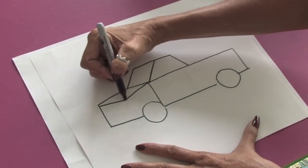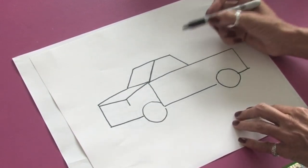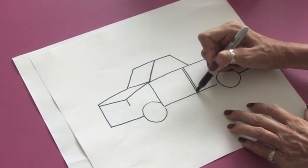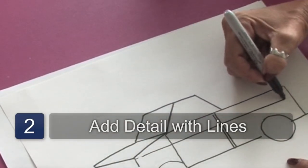So you can see already a truck starting to form but with very basic shapes. We're going to draw another line coming down here for the door. Maybe we'll put one line coming back here just to add in a little detail.